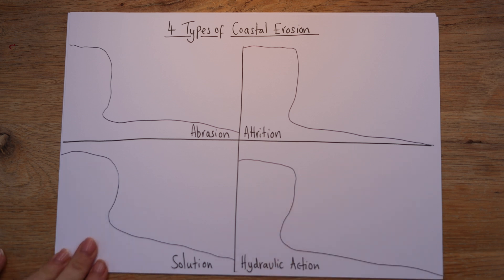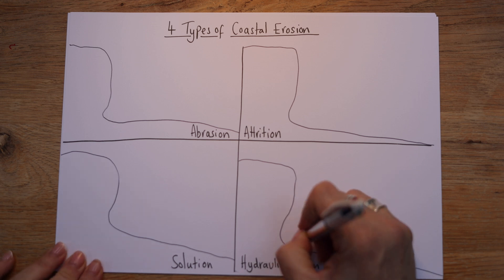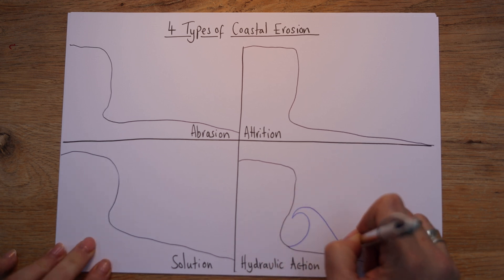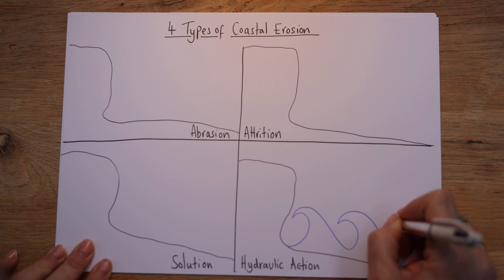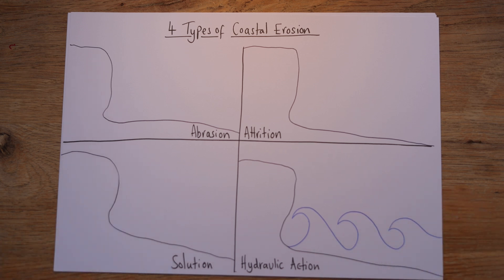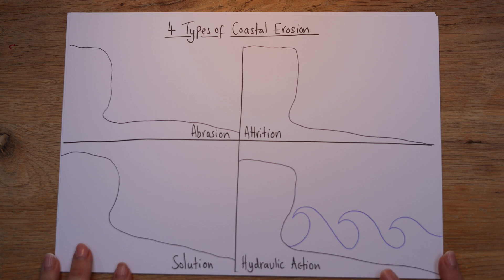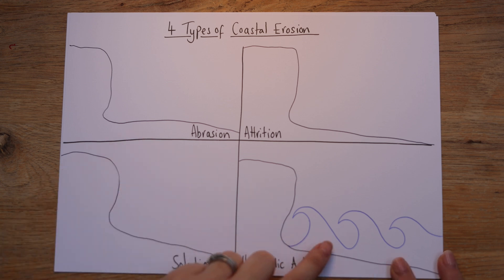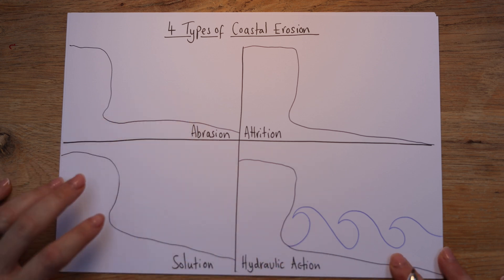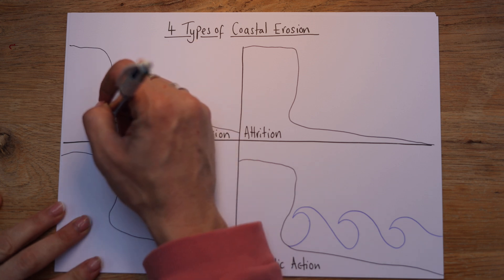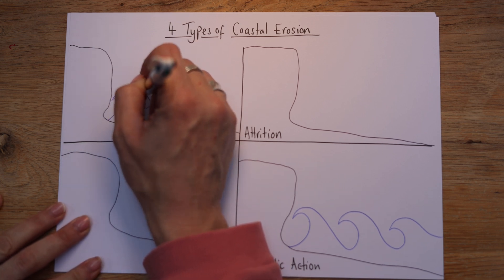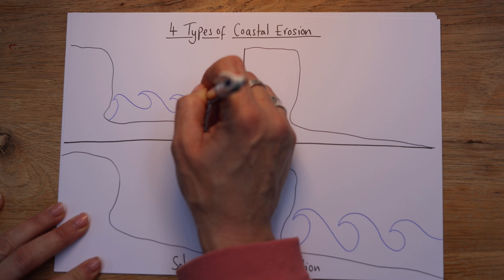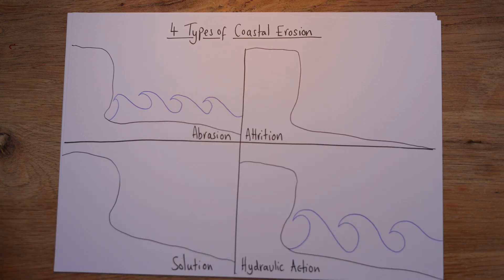I'm going to start down here with hydraulic action. The reason I'm starting here is hydraulic action is the most powerful type of erosion, so I'm going to draw some really big crashing waves. You can put some really nice big waves on yours. The next most powerful is abrasion up here — I'm going to draw them a little bit smaller, but not much.